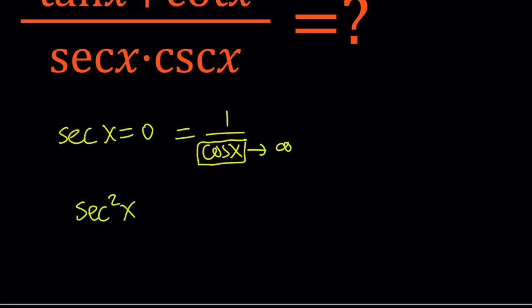Well-known identity, secant squared x equals 1 plus tangent squared x. Well, if secant is 0, secant squared is also 0, but if 1 plus tangent squared is 0, that means tangent squared x is equal to negative 1, and we don't have any real solutions for this. Are there any complex solutions? Something to think about.